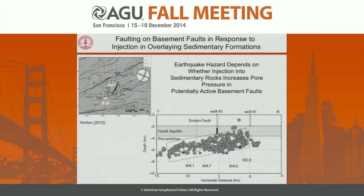When we look at cases like the Guy-Arkansas sequence, what's really important is the fact that injection in the sedimentary rocks above basement appears to have triggered faulting that extends down into basement. To me, the issue of seismic hazard is really very closely tied to whether or not there's a potential for triggering faults into the basement.